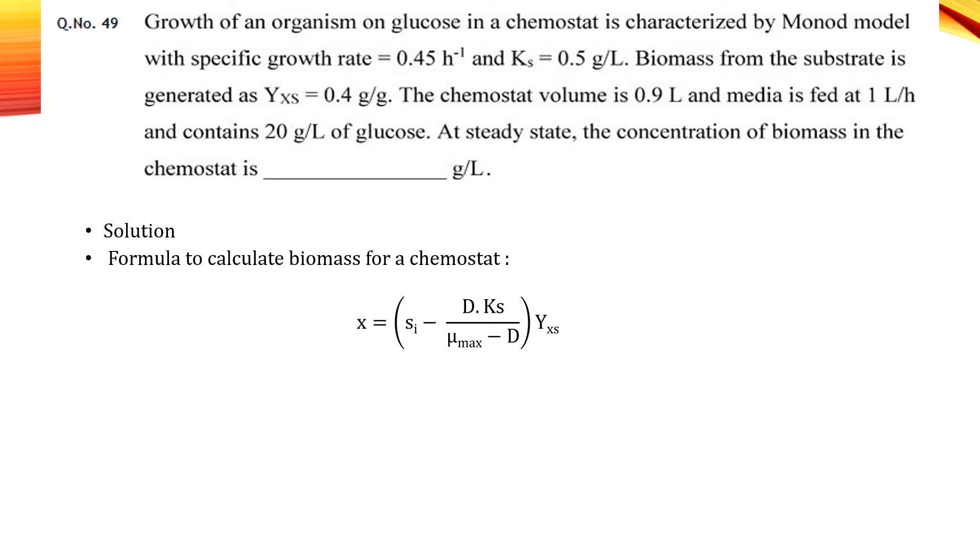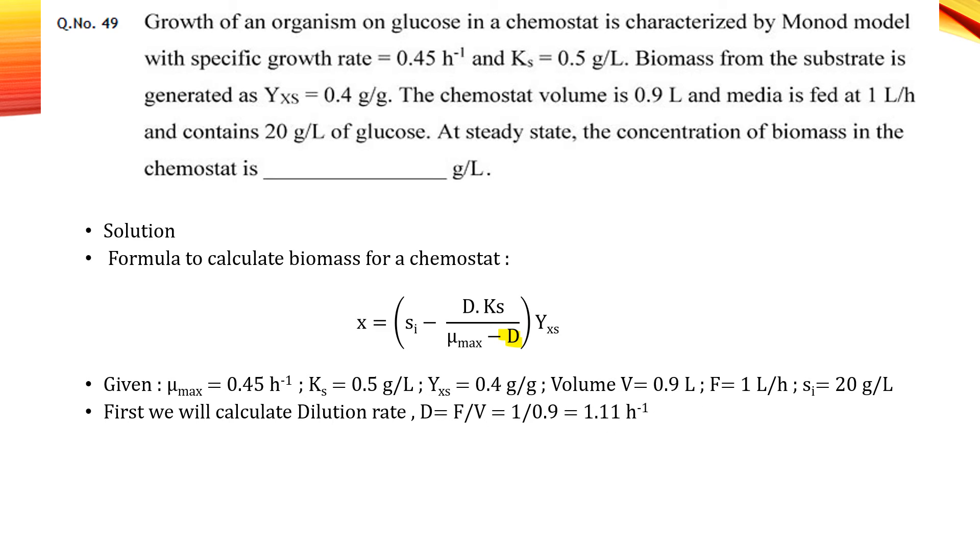We have given the following things, but first we need to find out the dilution rate which is not given here. As we know, D is flow rate divided by volume, and that will give us a value of 1.11 per hour.